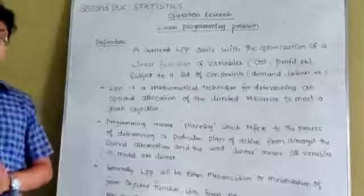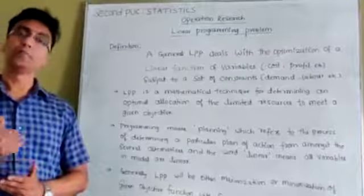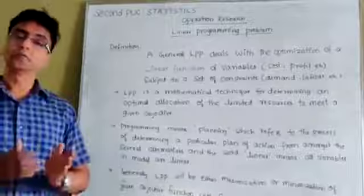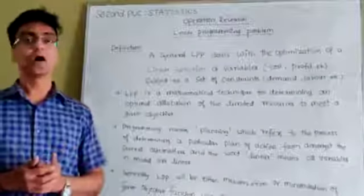LPP is a mathematical technique for determining optimal allocation of limited resources to meet a given objective. As I mentioned, all LPP problems consider either maximizing profit or minimizing cost. Basically, we have only two types of objective functions: maximize or minimize.